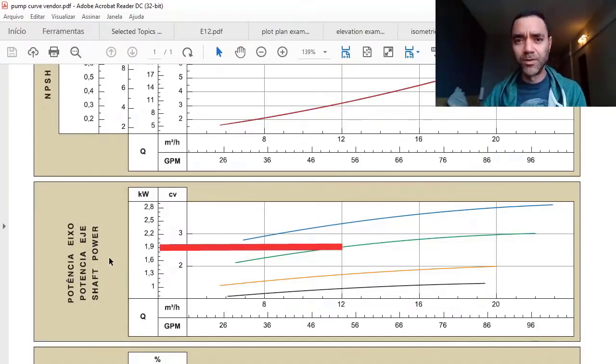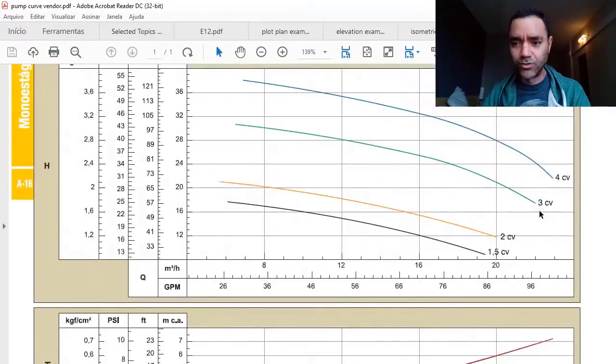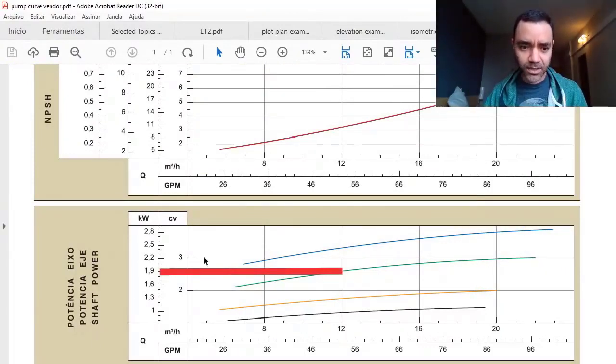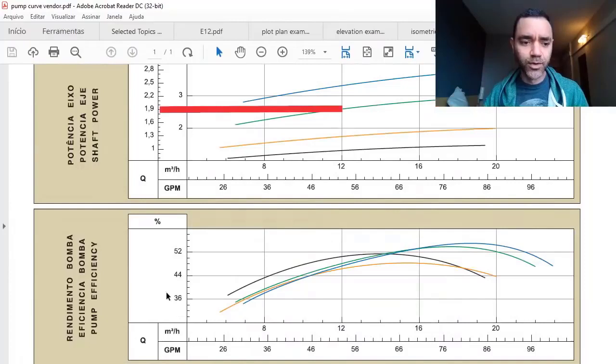Here, the vendor considered the motor size—the green line is the motor size—is 3 CV as the maximum shaft power. You can see the motor size is 3, but for this point of the curve I will not consume 3 CV, I will consume around 2.5 CV. Finally, we have the pump efficiency. At this point, we have around 45 to 48 percent of pump efficiency.